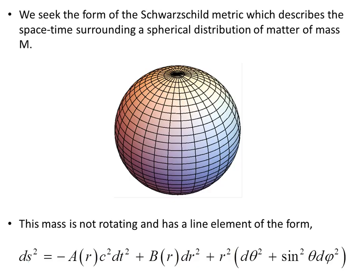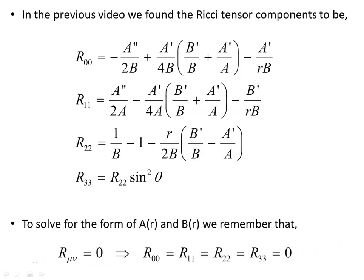We seek the form of the Schwarzschild metric which describes the spacetime surrounding a spherical distribution of matter of mass M. The space around here has no matter or energy in it, it's empty, and we want to know what is the metric to describe it around this spherical distribution of mass. This mass is not rotating, it is a static spacetime, and it has a line element of the form as we found in the previous two videos. ds squared is this object here, so the metric part of this is diagonal.